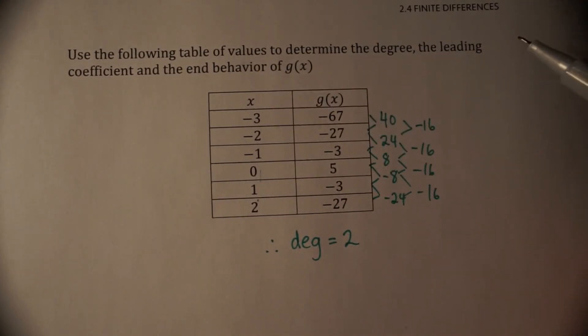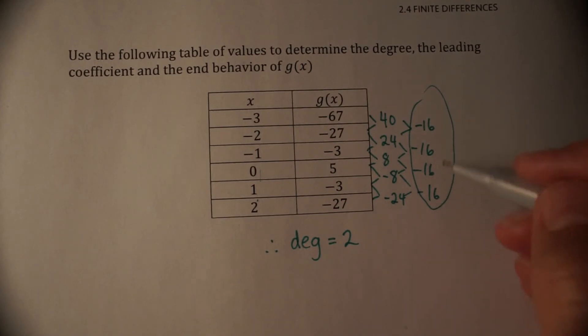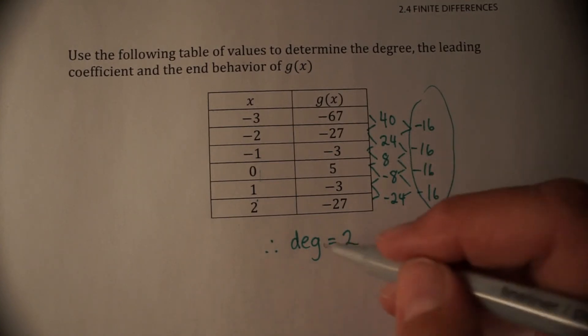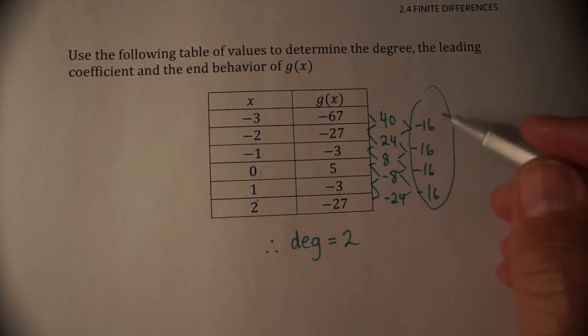It says the leading coefficient and the end behavior. So now that we've found our constant finite differences, is there any relationship between this actual number? We know that the number of times it took us to get it will give us the degree. But does it help us to find the leading coefficient or the end behavior? And the answer is yes. There is a little formula to help us.